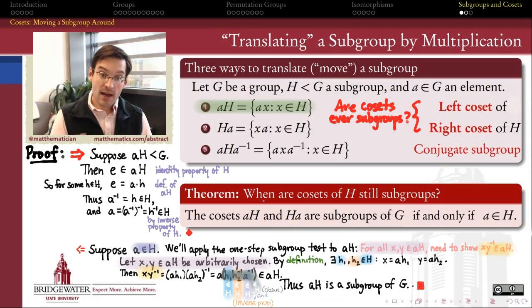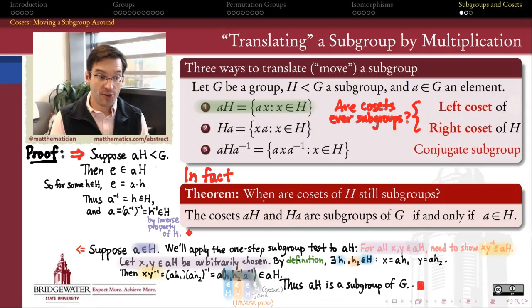So the only time that a coset of H is itself also a subgroup of H is when the element that we're choosing to multiply to make this coset, when that element belonged to the subgroup originally. And in fact, we can even make a stronger statement. Which subgroup is AH and HA, when A is already an element of H?